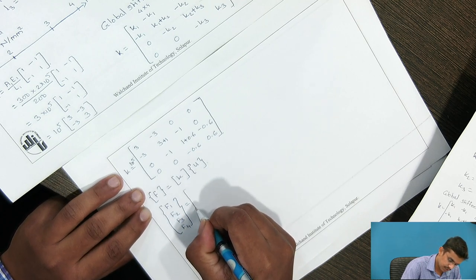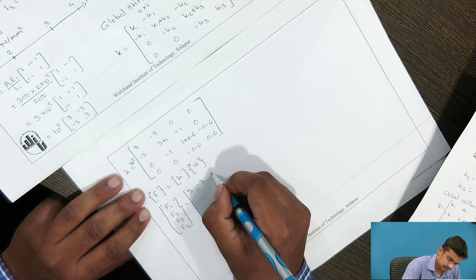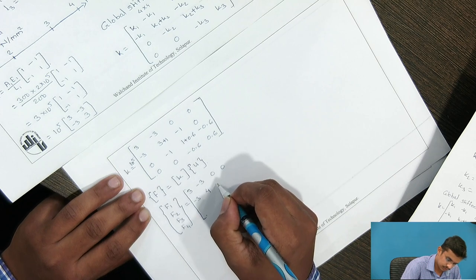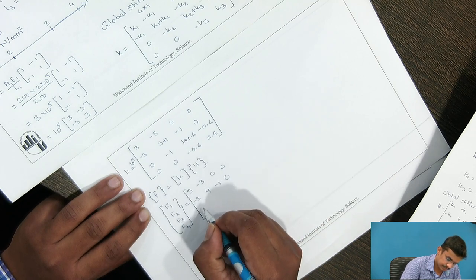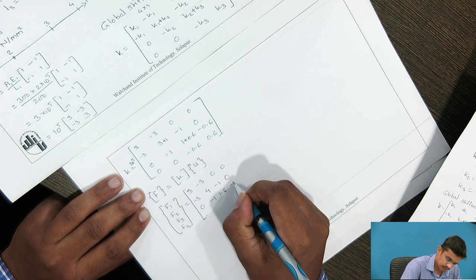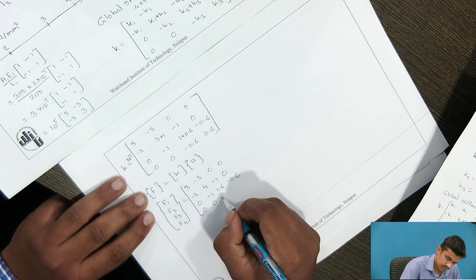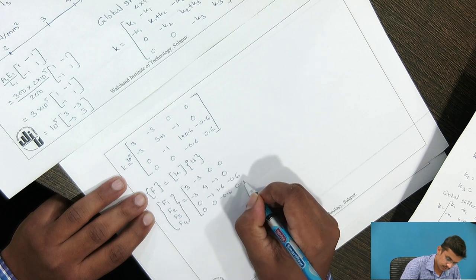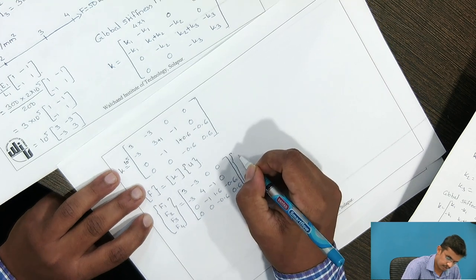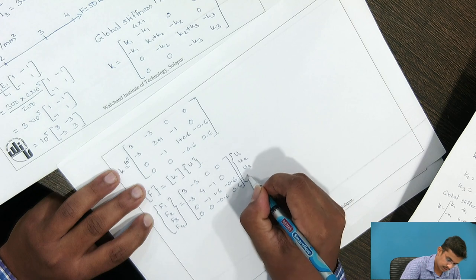The global stiffness matrix is: row 1: 3, minus 3, 0, 0; row 2: minus 3, 4, minus 1, 0; row 3: 0, minus 1, 1.6, minus 0.6; row 4: 0, 0, minus 0.6, 0.6. This is multiplied by the deformation vector U1, U2, U3, U4.